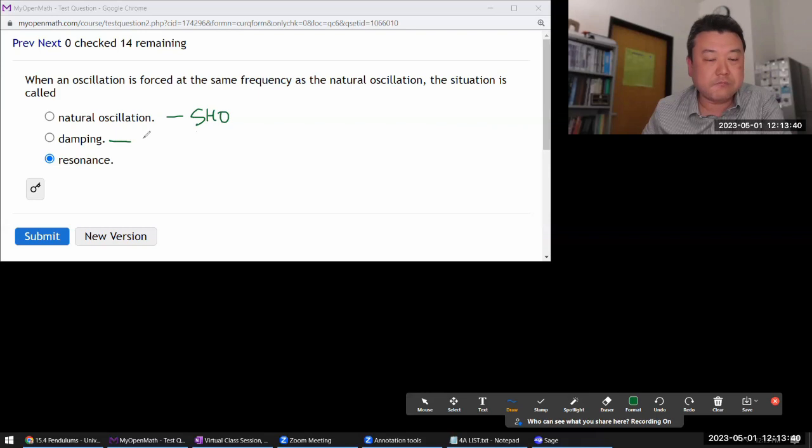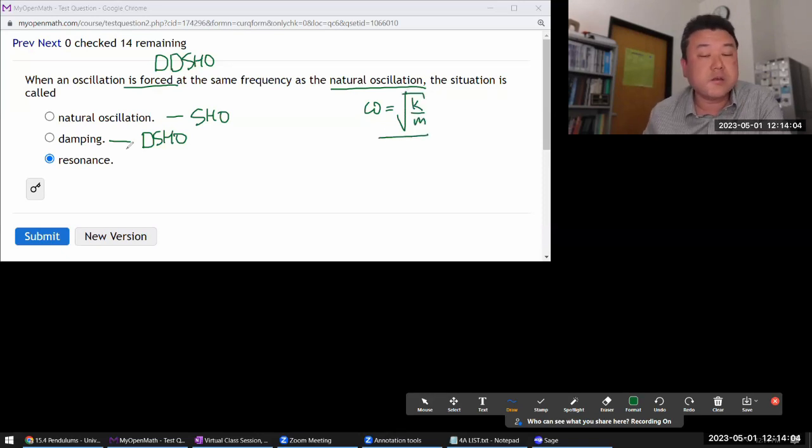Damping, that would be related to damped simple harmonic oscillator. And resonance is what happens, it's the forced part. It's a damped and driven simple harmonic oscillator. And when it's at the same frequency as the natural oscillation for spring, a mass on a spring, that would be square root of K over M. And the damping could be caused by either friction, air resistance, or other sources.